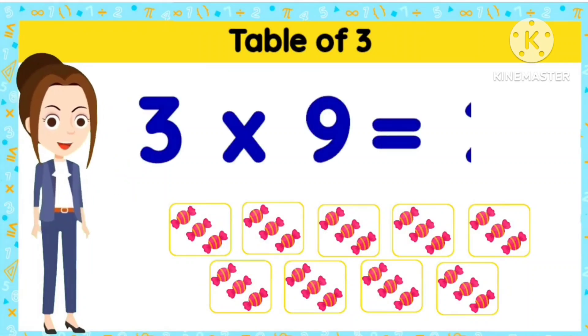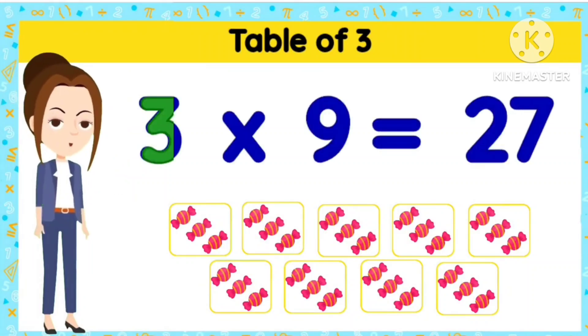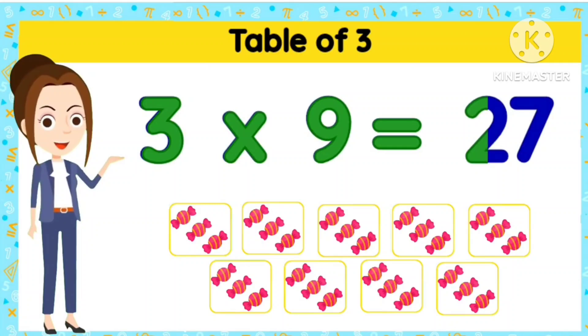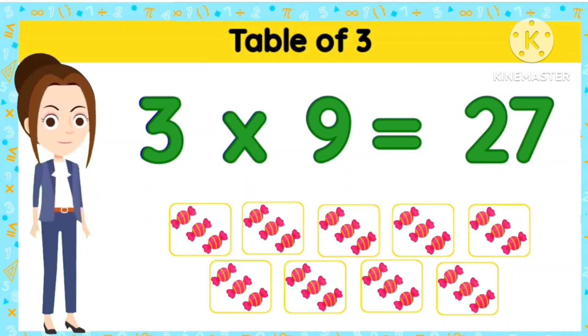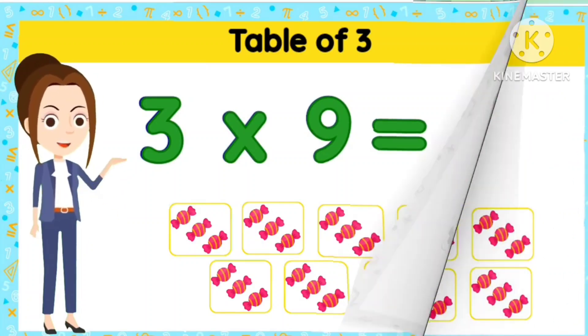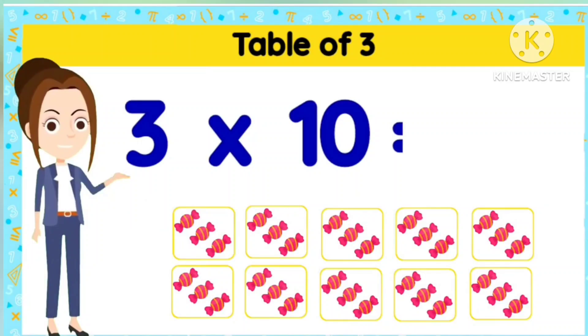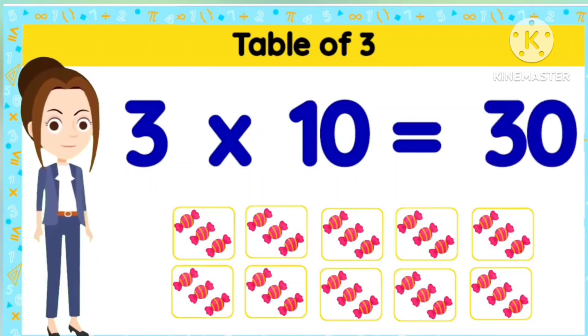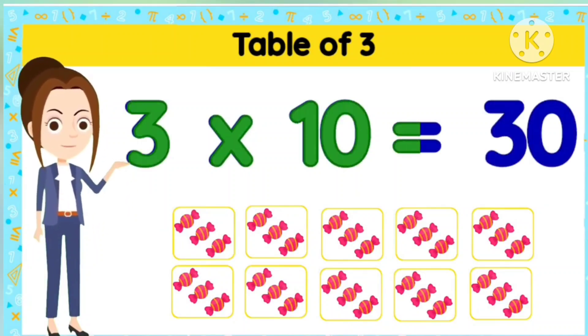3 9s are 27. 3 9s are 27. 3 10s are 30. 3 10s are 30.